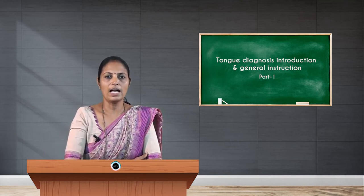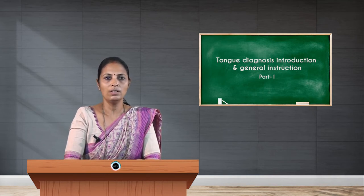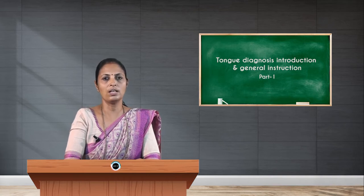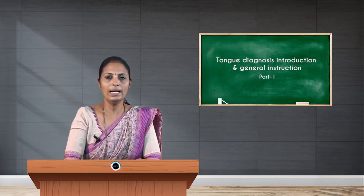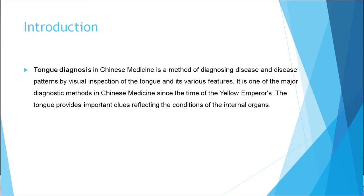There are four important aspects in TCM: the first is inspection, the second is palpation, the third is auscultation, and the fourth is history taking. Unlike conventional medicine practice, where investigations come first and are then correlated with history, in TCM they first perform inspection and then correlate with history and symptoms.